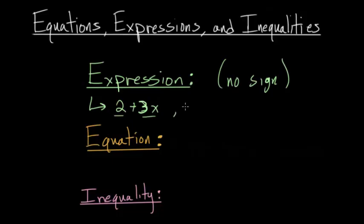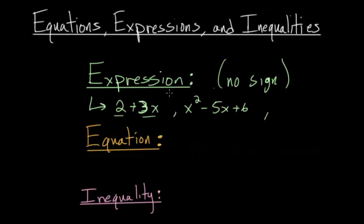Another example would be something like x squared minus 5x plus 6. Again, we don't have any kind of equation here, no equal sign, we're not going to be solving for x — this is just what we call an expression. And lastly, maybe something like 4a plus 3b minus 7z. We have no sign here, so this would again be an expression.